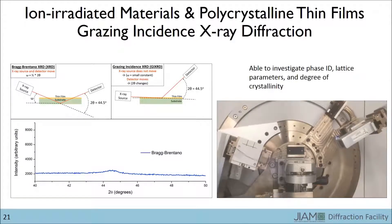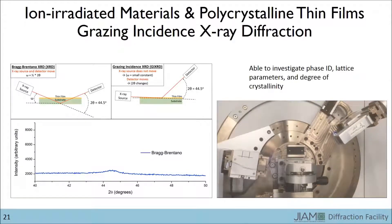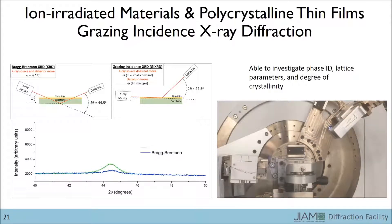Now we go to the grazing incidence configuration. The source moves to an angle of 4 degrees while the detector moves to 36 degrees. The detector then moves upward by 10 degrees and we see that the peak is larger.